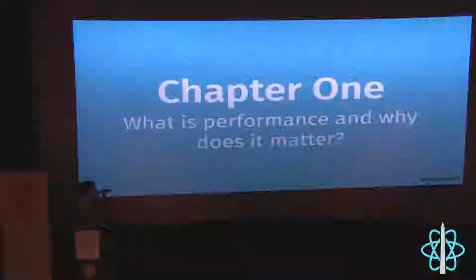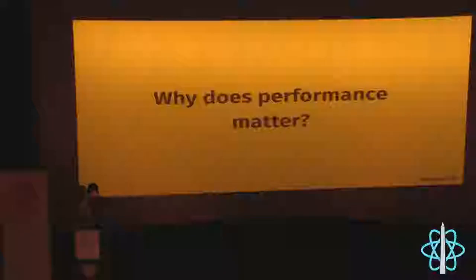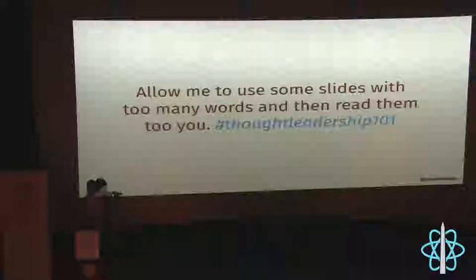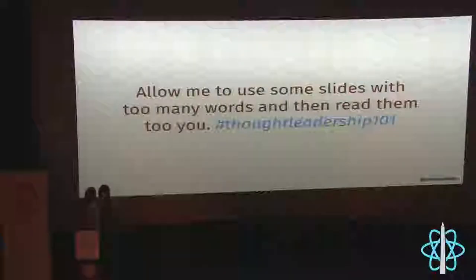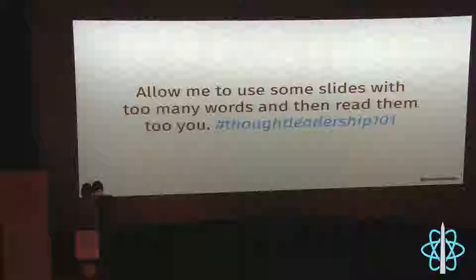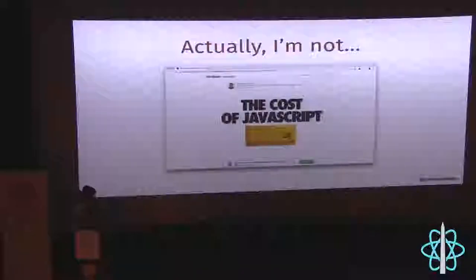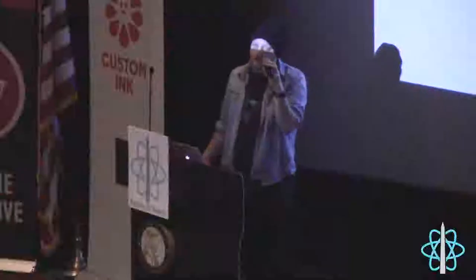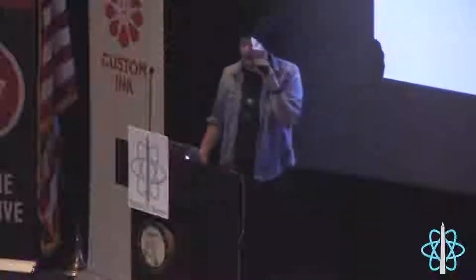Chapter one is called 'What is Performance and Why Does It Matter.' I had 20 slides with factoids about how companies make more money when their app is faster — but Robbie reminded me at the speaker dinner that I'm the only thing between you and happy hour. So those slides are online, I tweeted them out. The short version: Amazon makes more money for every 10 milliseconds they shave off response time, that kind of fun stuff.